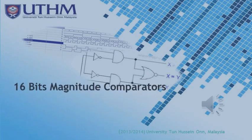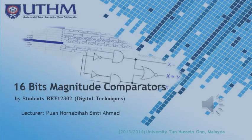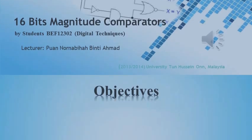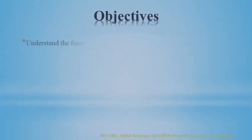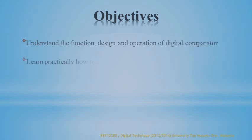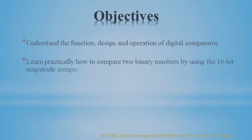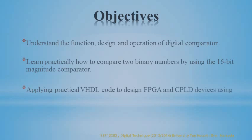Hi everyone. This video will present a project creating a 16-bit magnitude comparator using VHDL design. The objective of this project is to understand the function, design, and operation of a digital comparator, and to learn practically how to compare two binary numbers using the 16-bit magnitude comparator, applying VHDL code to design FPGA and CPLD devices using Xilinx ISE 14.5 edition.